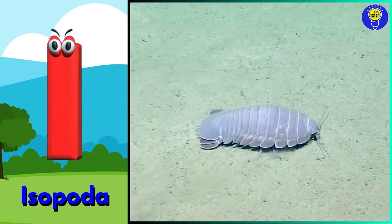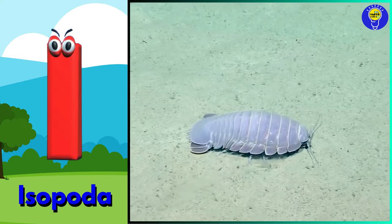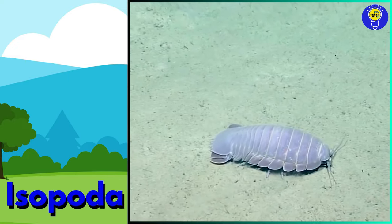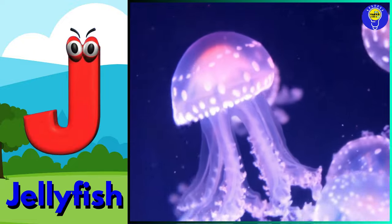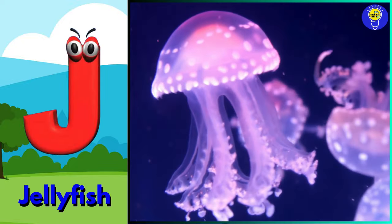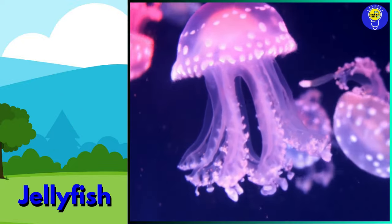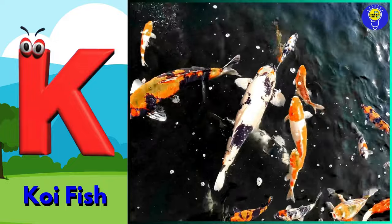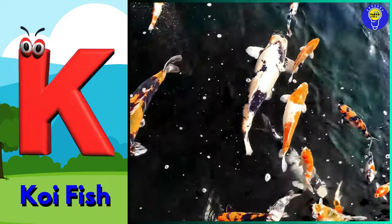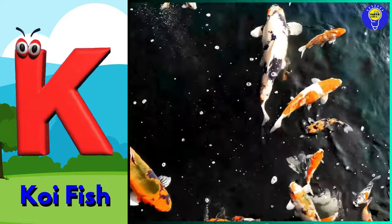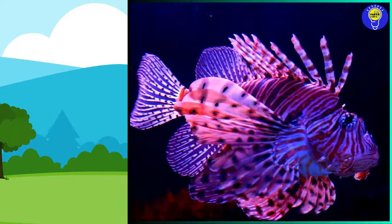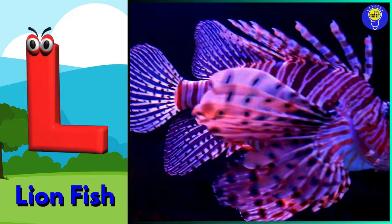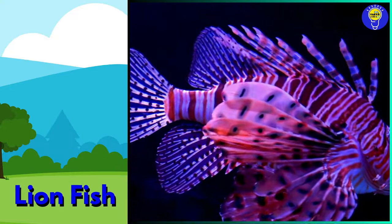I is for isopod. J is for jellyfish. K is for koi fish. L is for lionfish.